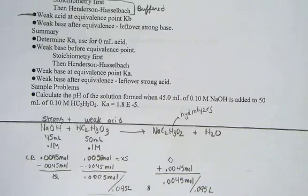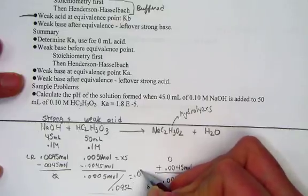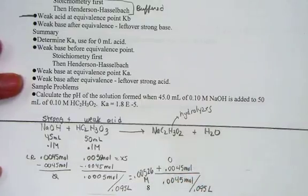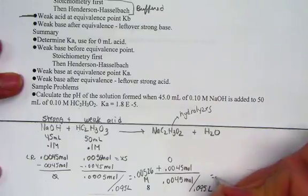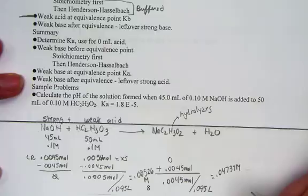How many moles of each? 0.0005, and I'll divide by 0.095, and I'm finding a molarity here of 0.00526 M. 0.0045 divided by 0.095 liters gets me 0.04737 M molar units.